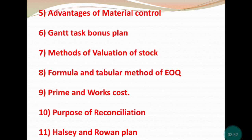A question can also be asked on FIFO method or weighted average method — methods of valuation of stock — so you need to read those methods. Then, Economic Order Quantity, whose formula is: root of (2 × A × O) divided by C. There are two types of methods: formula method and tabular method. Read a little theory about both because anything from this can appear in the paper.